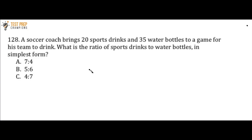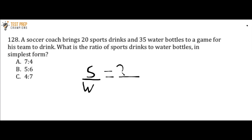So in this case, we're asked the ratio of sports drinks to water bottles. Let me put an S for sports drinks and a W for water bottles. Right now we know that there are 20 sports drinks, so I'll put 20 up here, and we have 35 water bottles, so I'll put 35 right here. Right now the ratio of sports drinks to water bottles is 20 over 35, but we want to simplify this down.